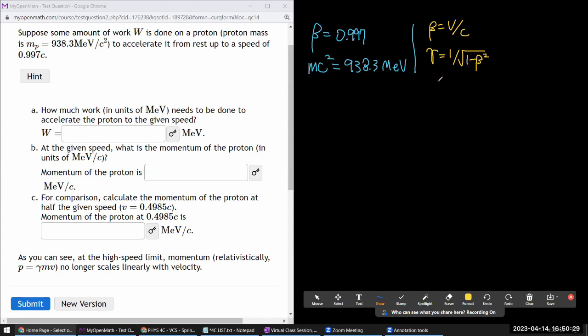Given beta, we can write the Lorentz factor gamma as 1 over square root of 1 minus beta squared. And given these two quantities, we can write down the relativistic energy as gamma mc squared and relativistic momentum as gamma mv or beta c. I like to just have them memorized.